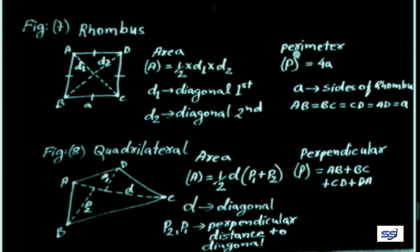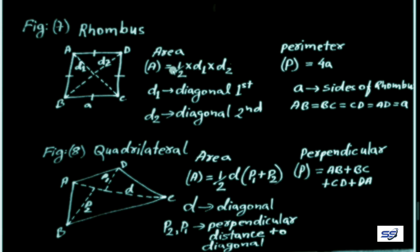To find the perimeter of a rhombus: P = 4a, where a is the side of the rhombus, since all sides are equal (AB = BC = CD = AD). The area formula uses the diagonals and the perimeter formula uses the side length.